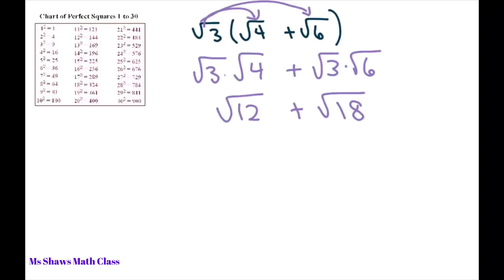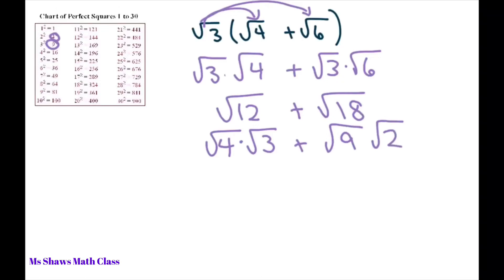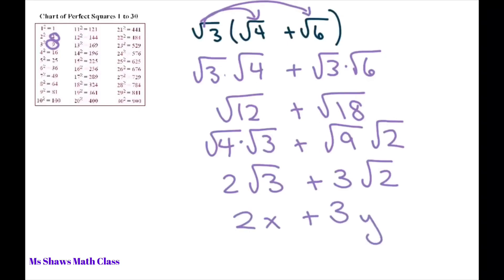Now go back to perfect squares: 4 divides 12, so square root of 12 = square root of 4 times square root of 3 = 2√3. And 9 divides 18, so square root of 18 = square root of 9 times square root of 2 = 3√2. You cannot add these because they're unlike terms — like 2x plus 3y — so your final answer is 2√3 + 3√2.